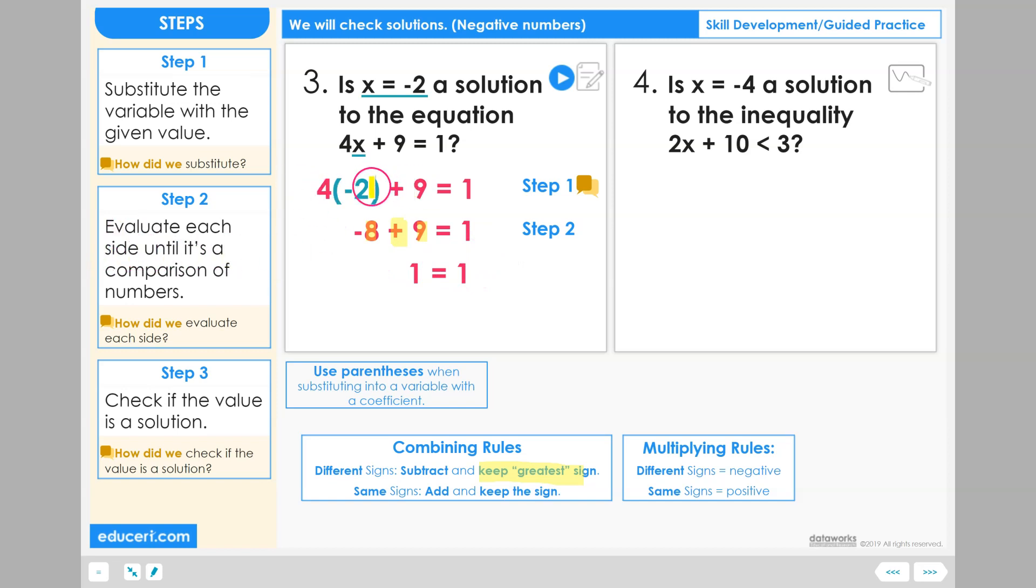And so now we have evaluated each side, and we have a comparison of numbers. How did we evaluate each side? We evaluated the left-hand side using the rules we learned when dealing with negative numbers in our operations, starting out by multiplying and then combining with the different signs.